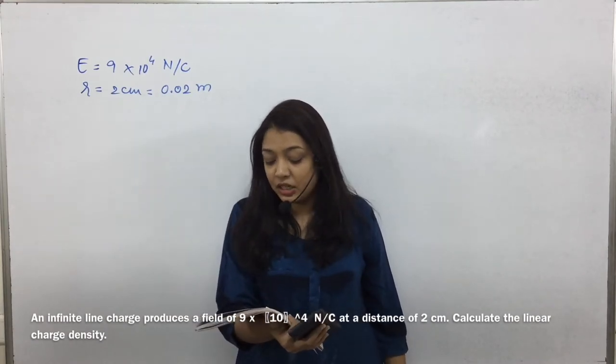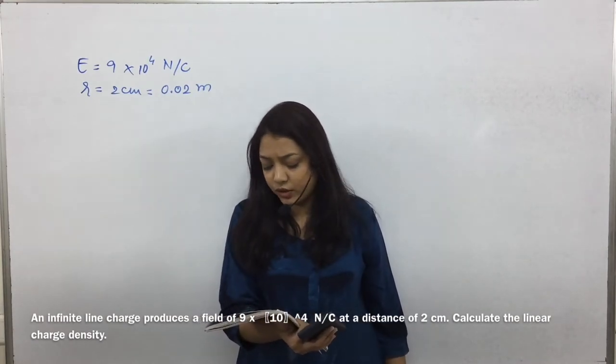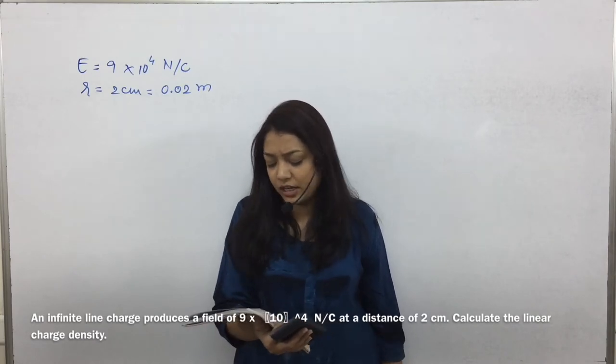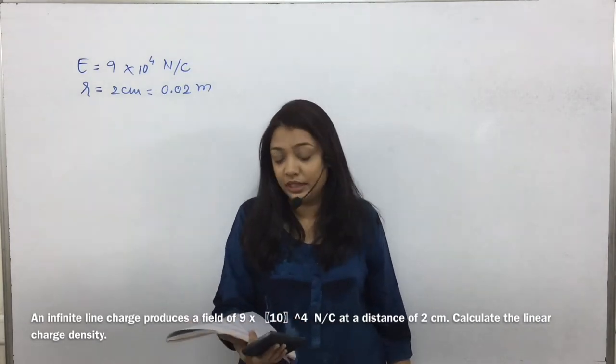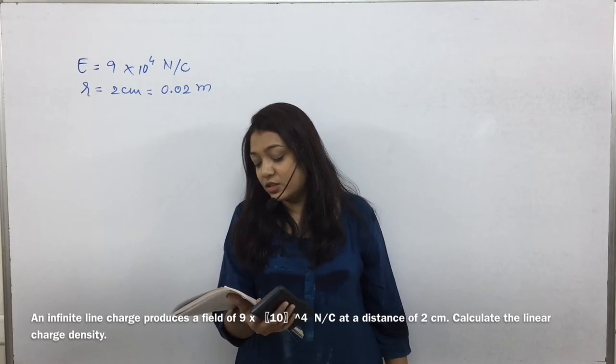It reads: an infinite line charge produces a field of 9 × 10⁴ newton per coulomb, written here, at a distance of 2 centimeter.